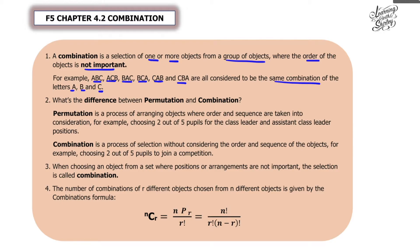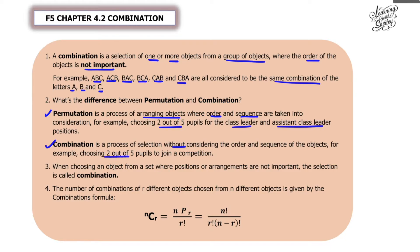What's the difference between permutation and combination? Permutation is a process of arranging objects where the order and sequence are taken into consideration — for example, choosing two out of five pupils for the class leader and assistant class leader positions. Combination is a process of selection without considering the order and sequence of the objects — for example, choosing two out of five pupils to join a competition.